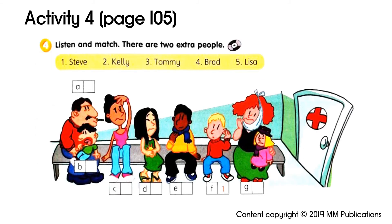Activity 4: Listen and match. There are two extra people. One — Hello there, Steve. Hello, Dr Shepherd. What's the matter, Steve? Does your head hurt? No, it doesn't. I went swimming yesterday and now my ear hurts. Two — Doctor, I don't feel well. I was at a party and I ate too much. Does your stomach hurt, Kelly? Yes, it hurts a lot. You should eat a light dinner and take some of this medicine. Three — Hello, Brad. What's the matter with Tommy? He's got a sore throat. Oh, I see — he hasn't only got a sore throat, he's got a bad cough too. Yes, he has. Here's some medicine. You should give it to Tommy in the morning and at night. Thank you, doctor.